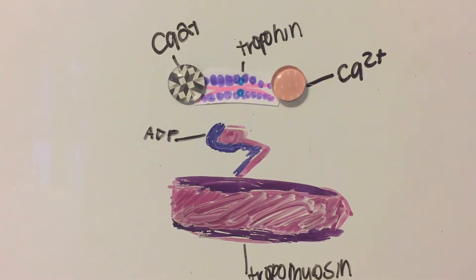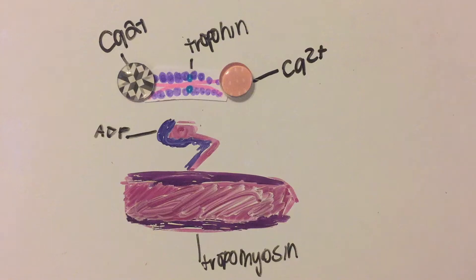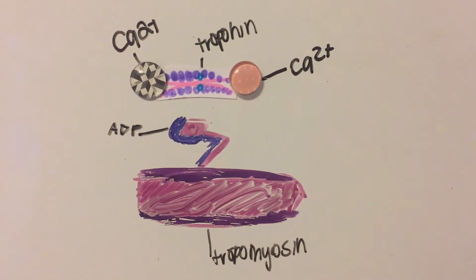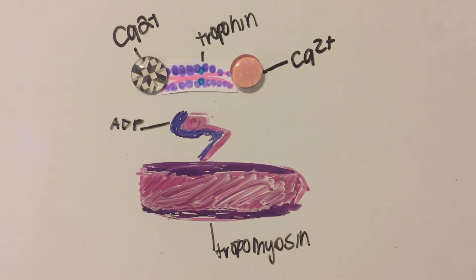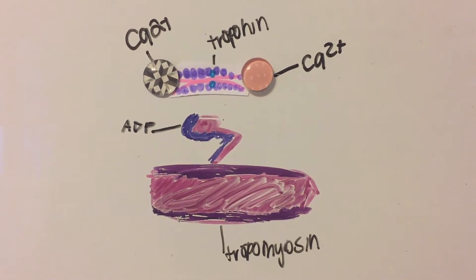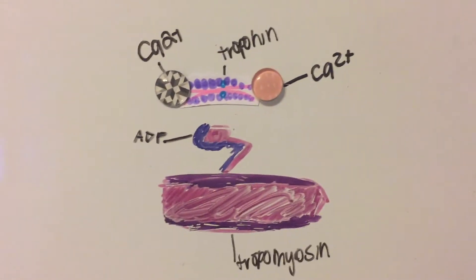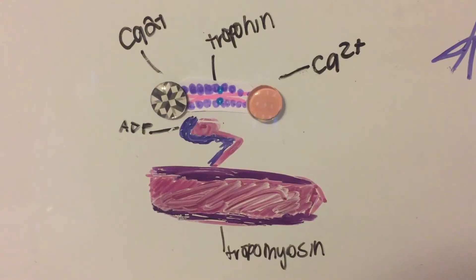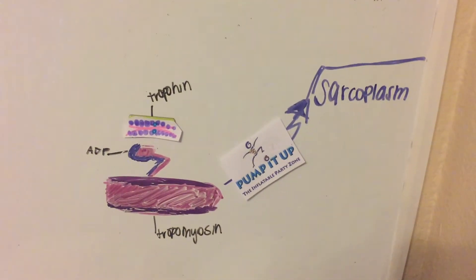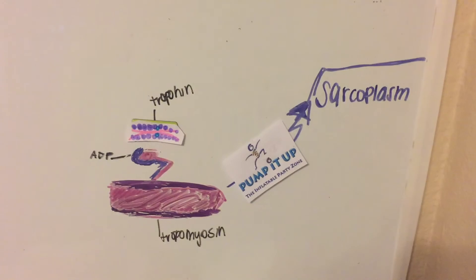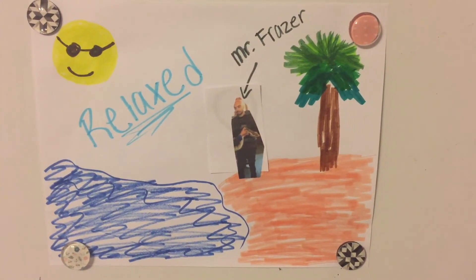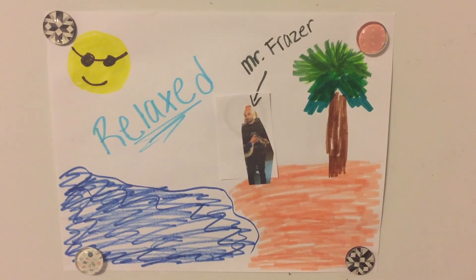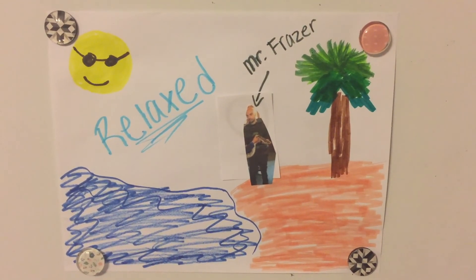Then the action potential ends, and Ca2+ is removed from the troponin. It is then pumped back into the sarcoplasm. The blocking action of the tropomyosin is restored with the removal of calcium. Finally, the crossbridge formation is back to normal and relaxation occurs.